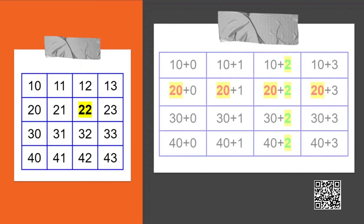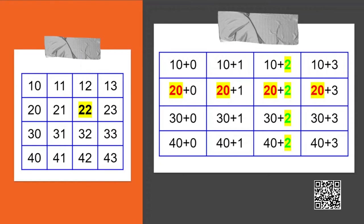Here, you can see the table on the left is the same as the table on the right, just that the numbers are split in a particular fashion. Observe in each row and column there is something common. For example, in the second row, all boxes have 20 and in the third column, all the boxes have 2. So when the number 22 is chosen, it means 20 plus 2 is chosen, and striking out its row and column means we are removing all other 20s and all other 2s from the table. This happens when we choose other boxes also.